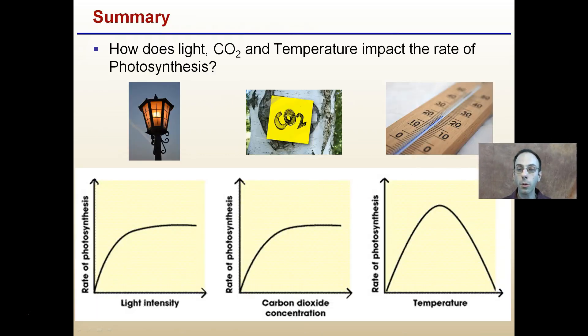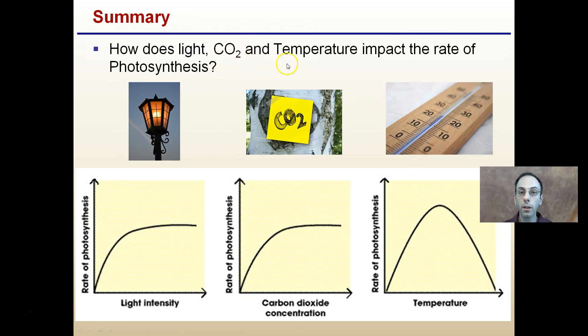So the general summary here, just to put it in graphical form, how does light, carbon dioxide, and temperature impact the rate of photosynthesis? You can see how light impacts it, and carbon dioxide have very similar graphs, and temperature has that optimum, again, around 86 degrees Fahrenheit, and photosynthetic rate will be lower at temperatures greater than 86 or less than 86 degrees Fahrenheit.